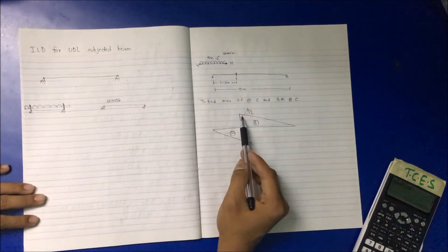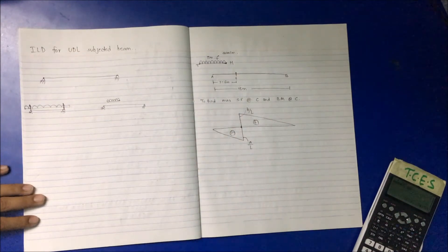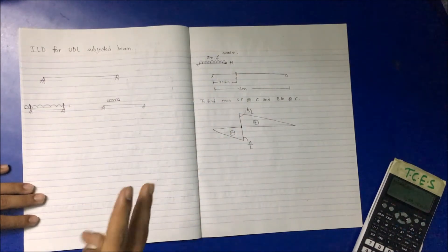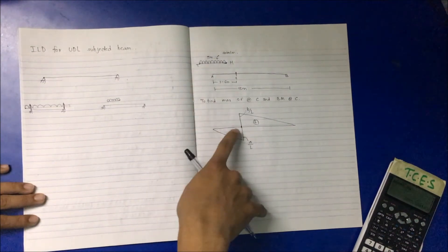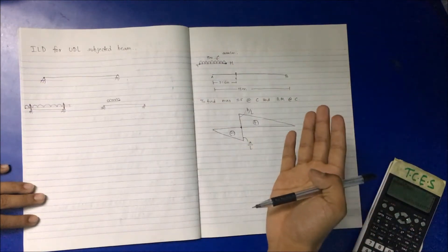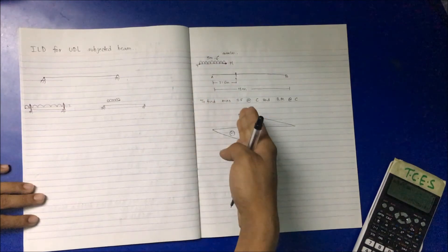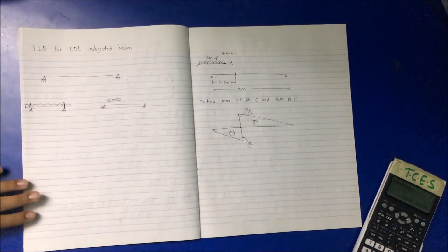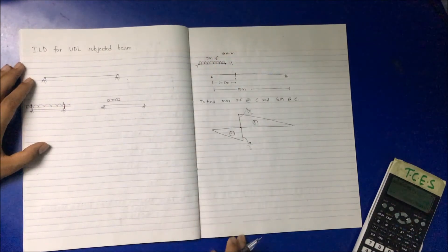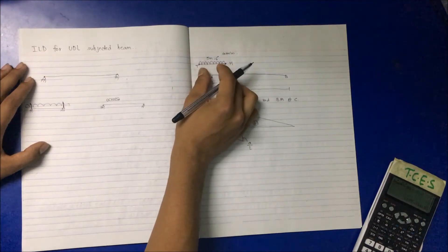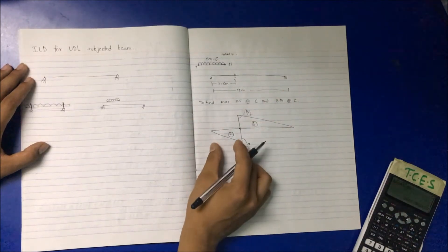When the tail just touches the positive portion, maximum positive shear force occurs — similar to the case of multiple concentrated loads. The span of the beam is 15 meters, the UDL is 5 meters, and the portion at which we find the shear force is 6 meters.